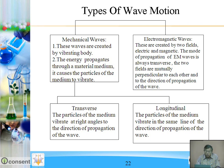Mechanical waves means: number one, these waves are created by a vibrating body. Number two, the energy propagates through a material medium. It causes the particles of the medium to vibrate. And then two types: transverse and longitudinal.